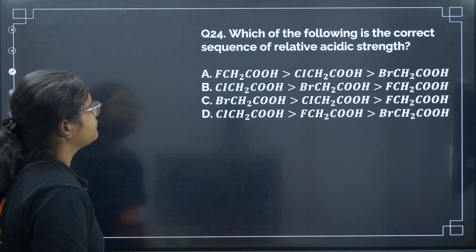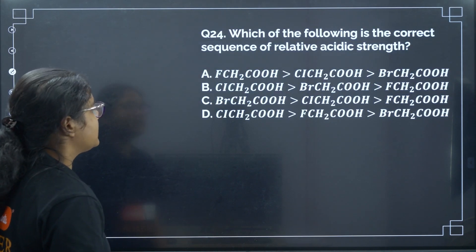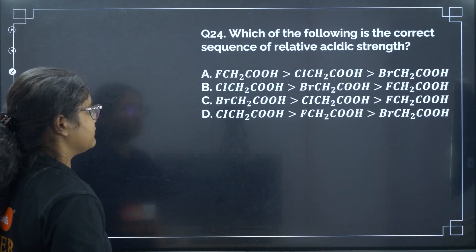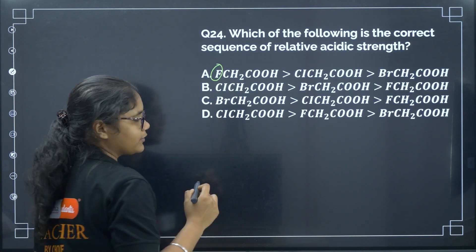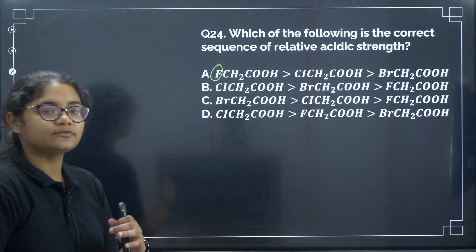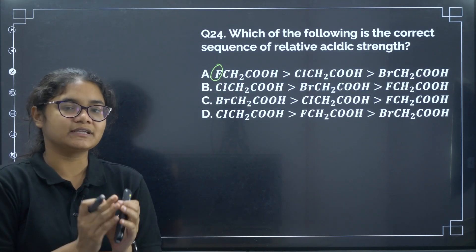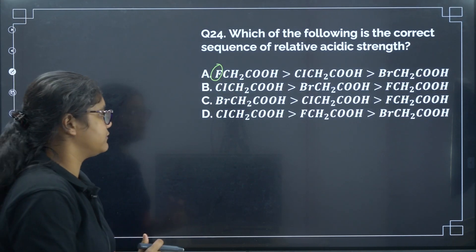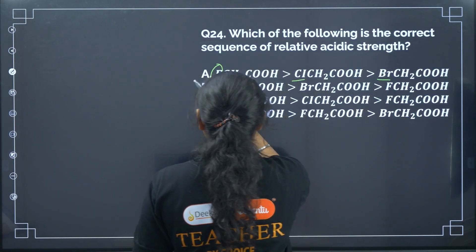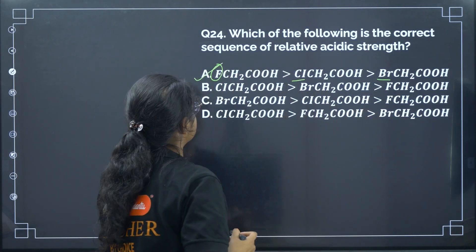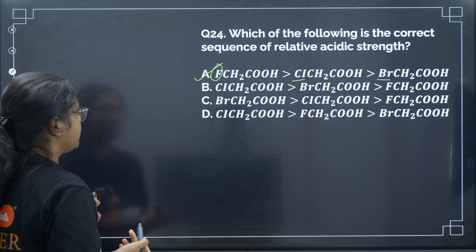Next: which is the correct sequence of relative acidic strength? Fluorine is the most electronegative element, so it stabilizes the conjugate base most strongly due to its high electronegativity. The order is F > Cl > Br. Correct answer: option A.